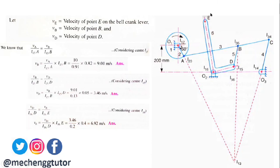Friends, that is what was asked in this problem — to determine the velocity of the bell crank lever at point E — and we have determined it as 6.92 meters per second. That's all for today. With this lecture we have completed the examples on determining velocity using the instantaneous center method, covering both part one and part two.